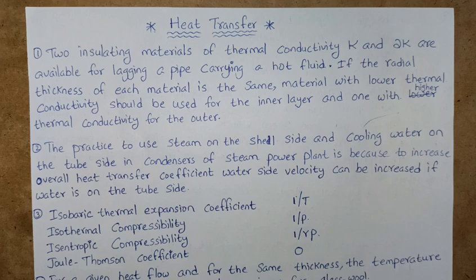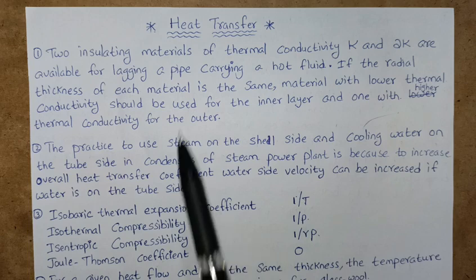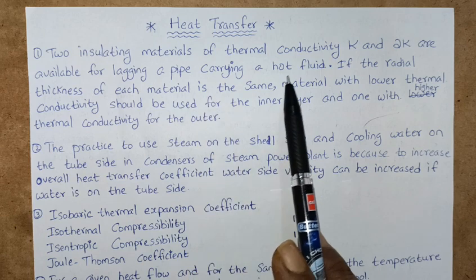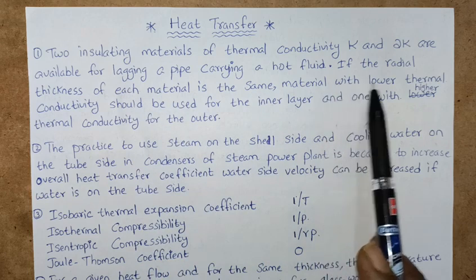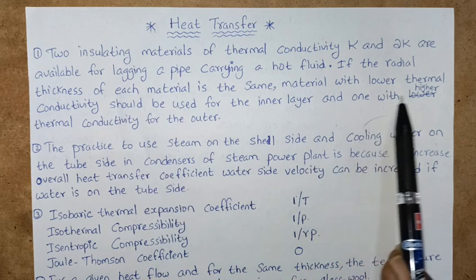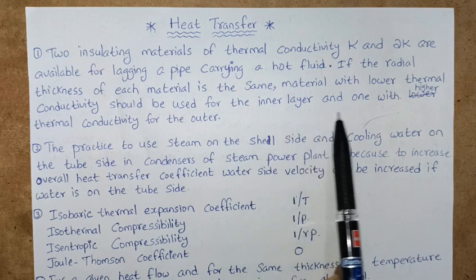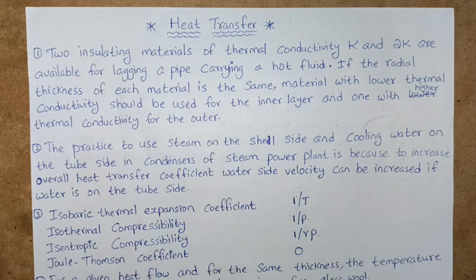So now we'll start today's class on heat transfer. Two insulating materials of thermal conductivity k and 2k are available for lagging a pipe carrying a hot fluid. If the radial thickness of each material is the same, material with lower thermal conductivity should be used for inner layer and one with higher thermal conductivity for the outer. Friends, if we read some content and write it, we will remember forever. As we are dealing with this competitive examination, definitely lot of things we have to remember, so it's better that you read and write—reading and writing is our best policy to get success in this competitive exam.